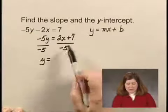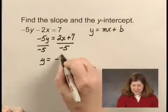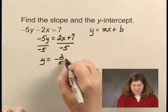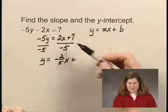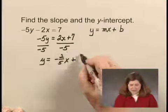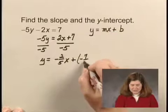I can divide 2x by -5 to get -2/5x plus... And then I divide 7 by -5 to get -7/5.